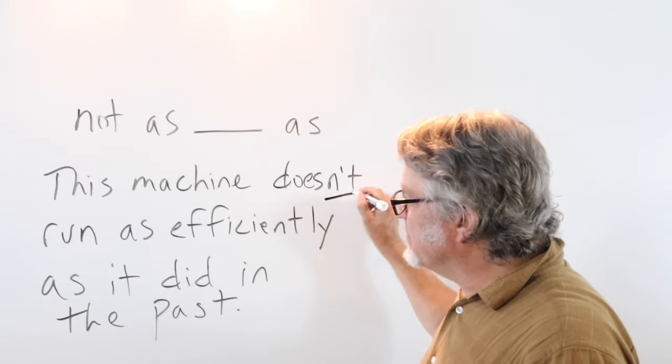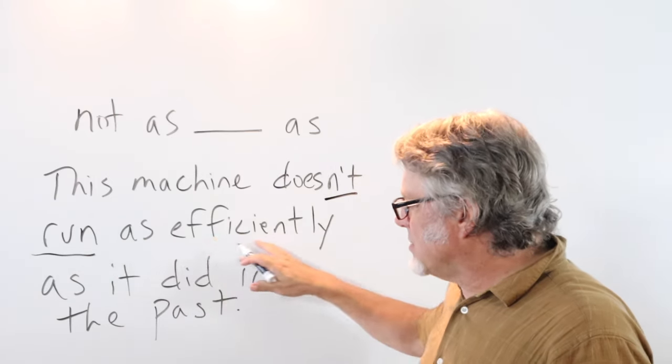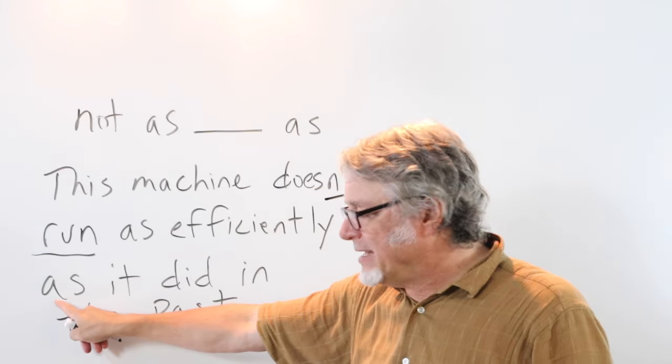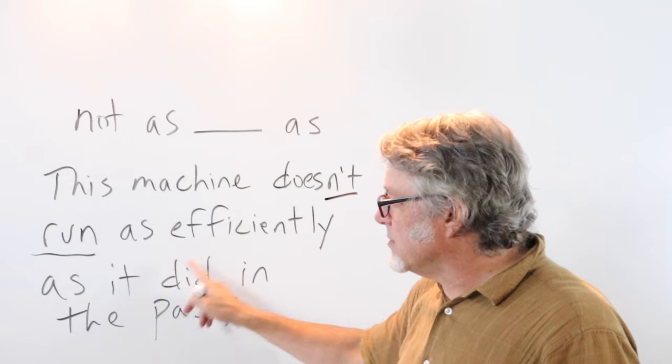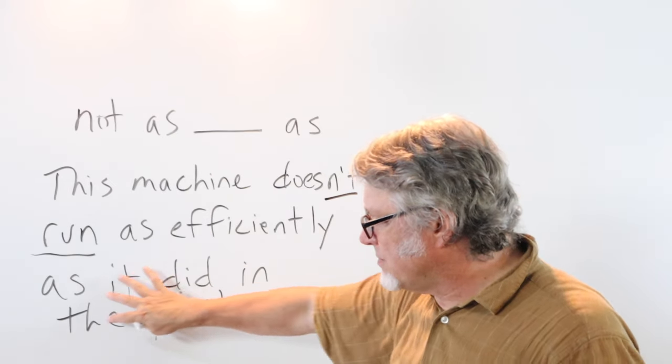This machine doesn't run as efficiently as it did in the past. So here is the negative. This is the main verb. As. Here is the adverb, efficiently. And then here is the word as. This is true now, and then this is the past.